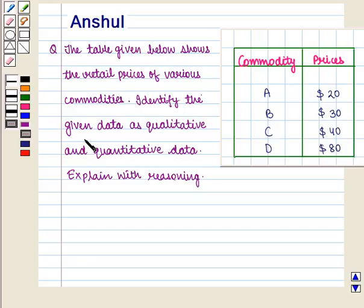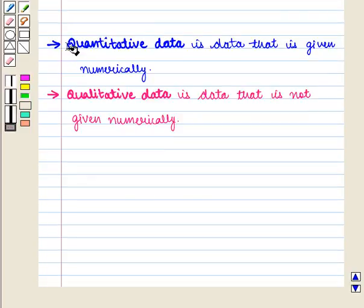Identify the given data as qualitative and quantitative data. Explain with reasoning. We know that quantitative data is data that is given numerically, and qualitative data is data that is not given numerically.